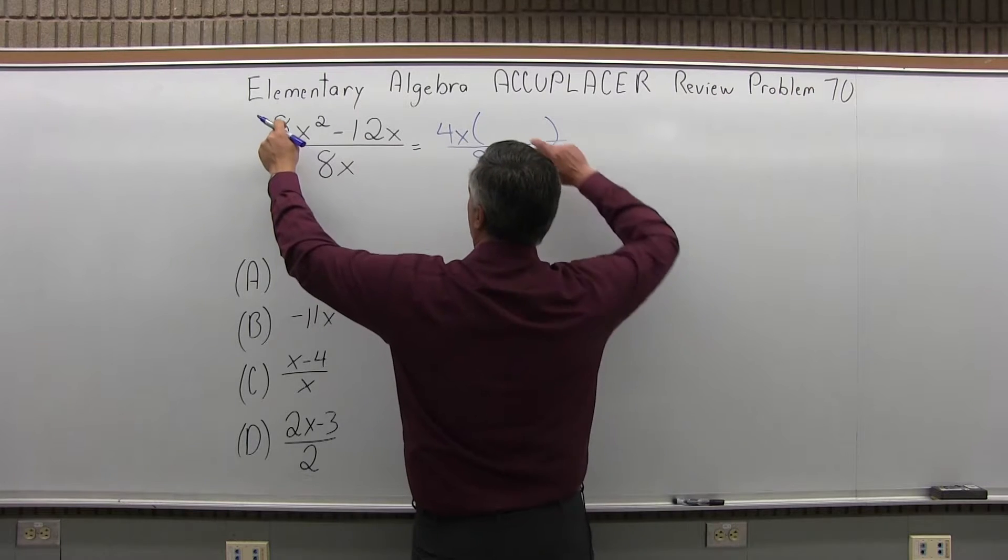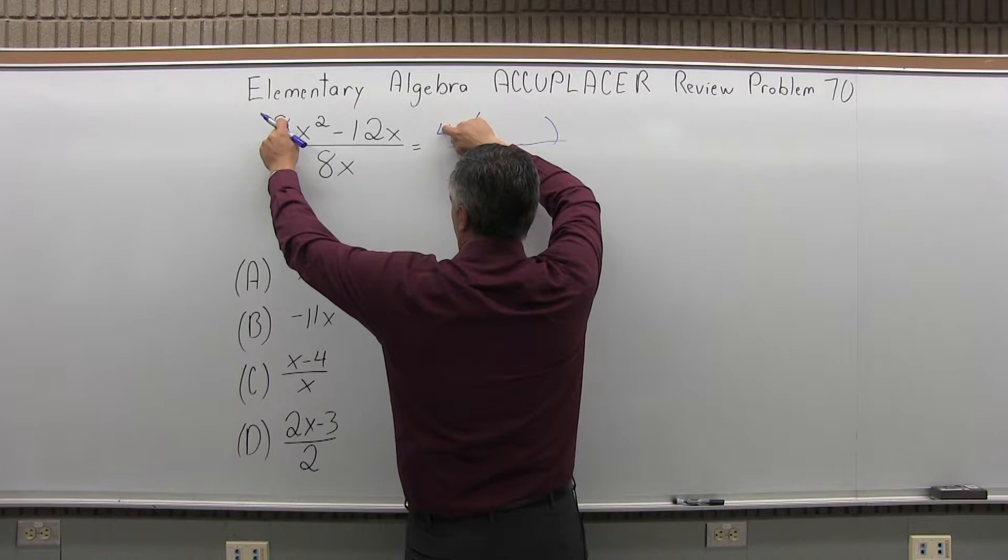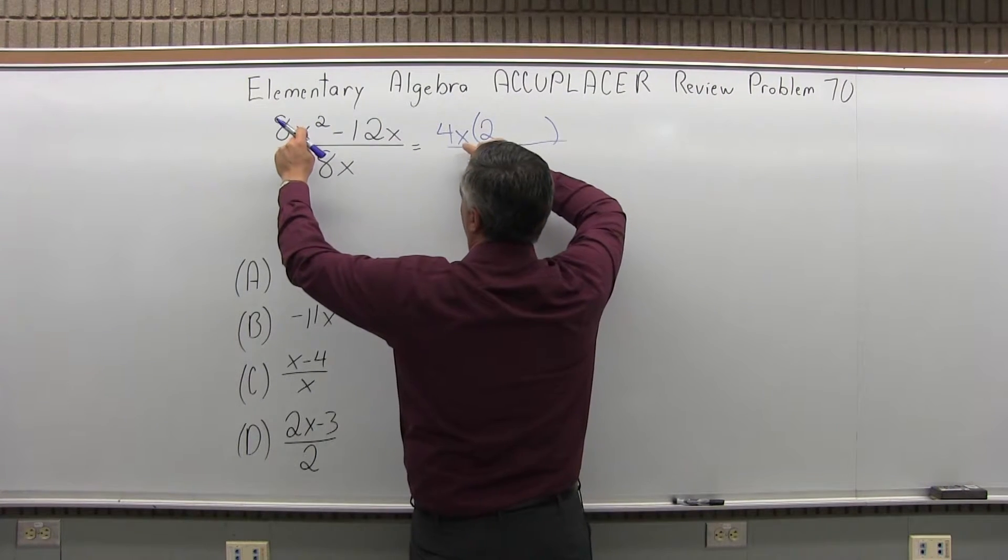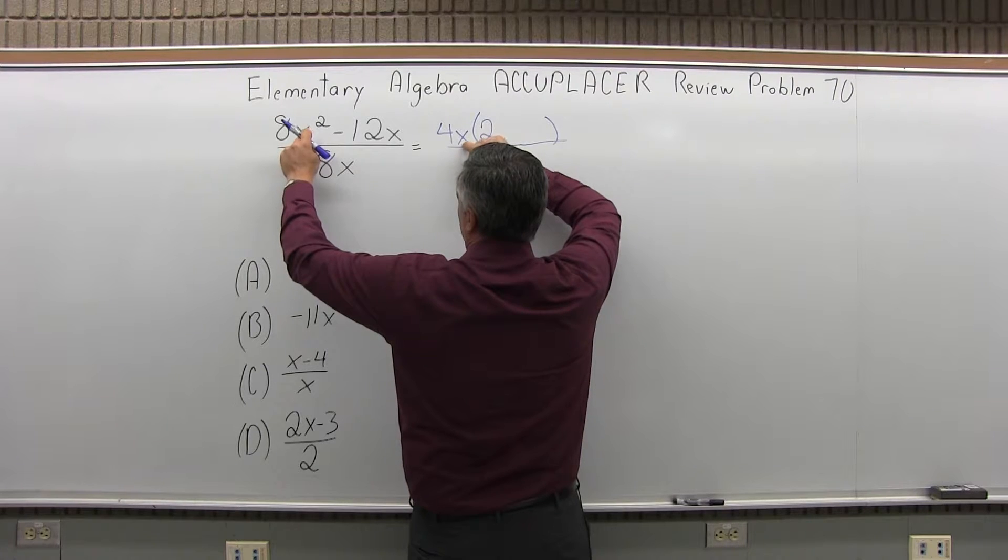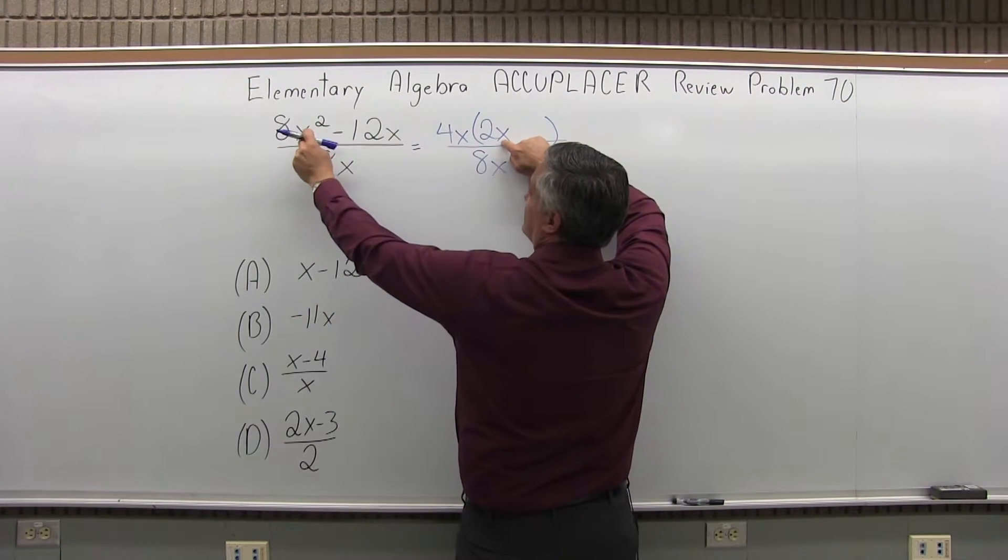Inside the parentheses, 4x times something equals 8x squared. First look at the numbers - 4 times what is 8? It's 2, and they're positive. Then something times x makes x squared, which is x. So 4x times 2x is 8x squared.